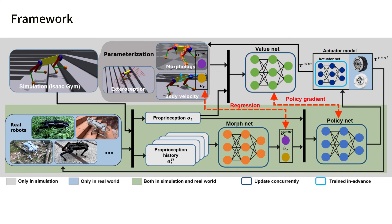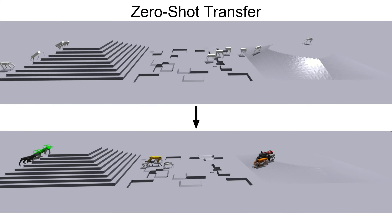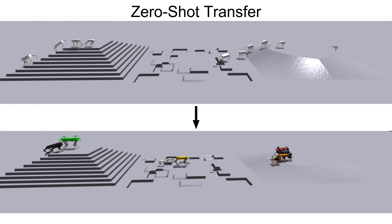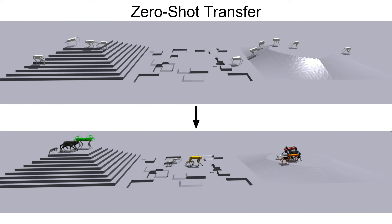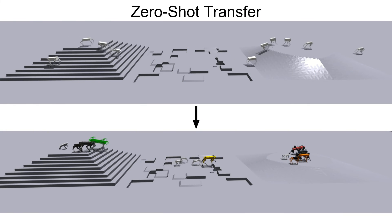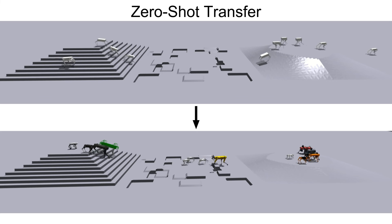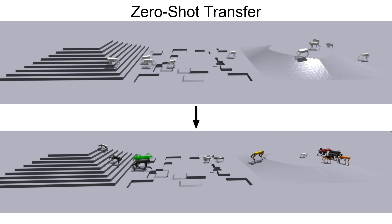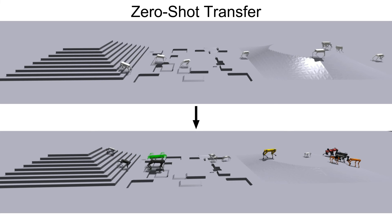Ultimately, this general controller can be directly deployed on any real quadrupedal robot and empowers them to traverse various challenging terrains. The policy trained with the templated morphologies is able to generalize to all existing commercial quadruped robots, even including several types that are outside the training range.